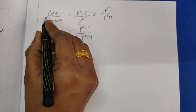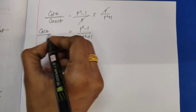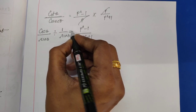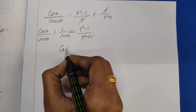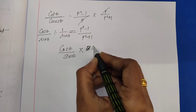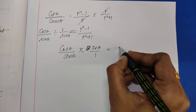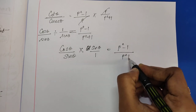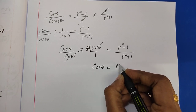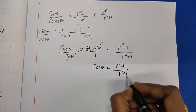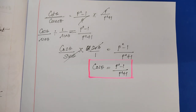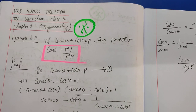Now, cot theta is cos theta by sin theta, and cosecant theta is 1 by sin theta. So on the left-hand side, cot theta divided by cosecant theta equals cos theta by sin theta multiplied by sin theta by 1. The sin theta cancels, giving cos theta equals p squared minus 1 by p squared plus 1. This is our result. Example 6.11 is complete.